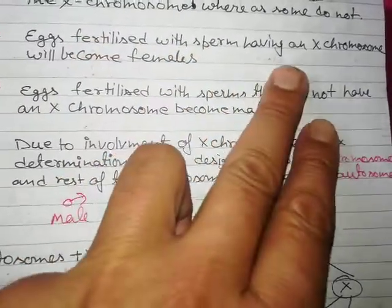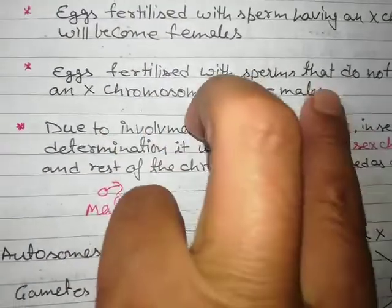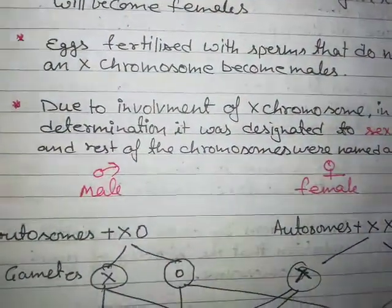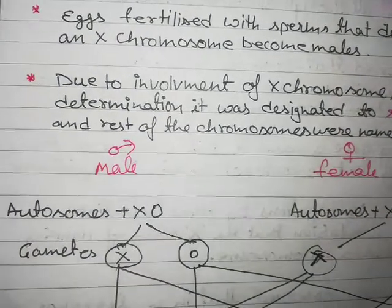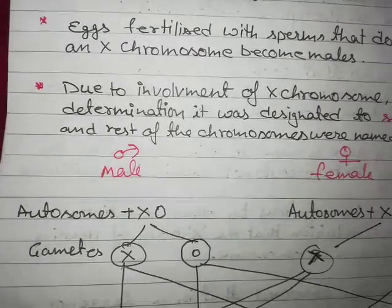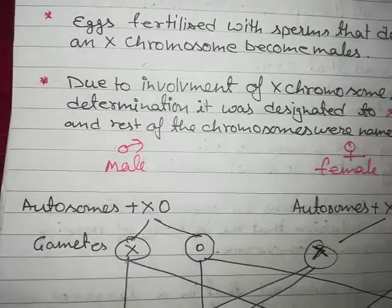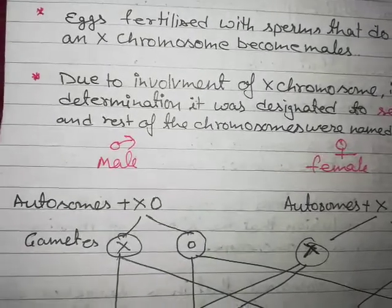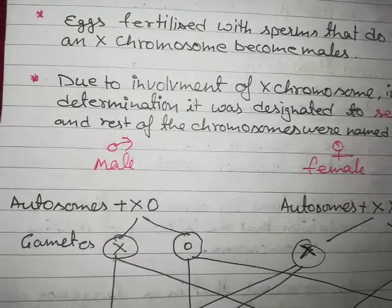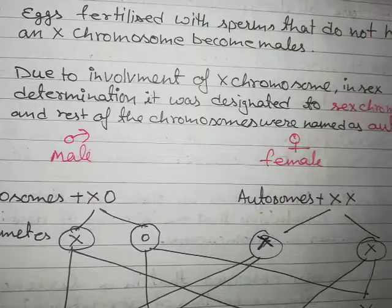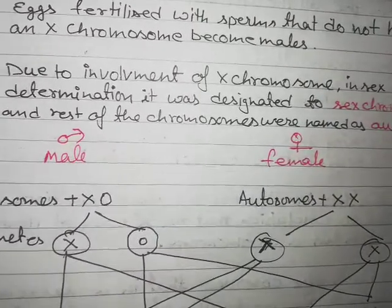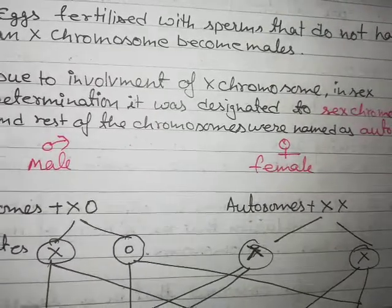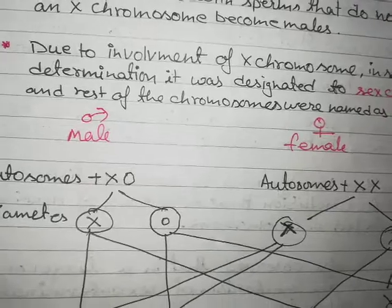The egg fertilized with the sperm having an X chromosome will become female, while the egg fertilized with sperm that does not have any X chromosome will become male. When a female egg carrying an X chromosome is fertilized by a sperm without an additional X chromosome, after zygote formation it will become a male insect. Due to the involvement of the X chromosome in sex determination, it was designated as the sex chromosome, while the rest of the chromosomes with no involvement are called autosomes.